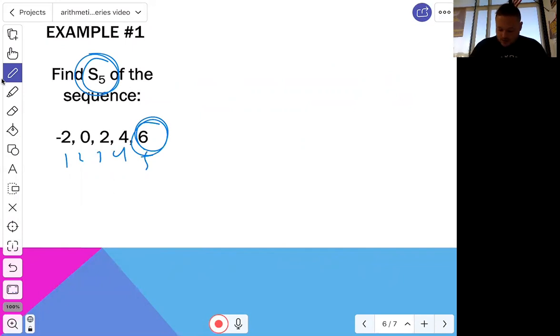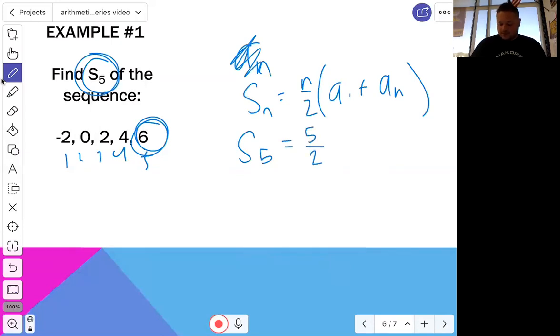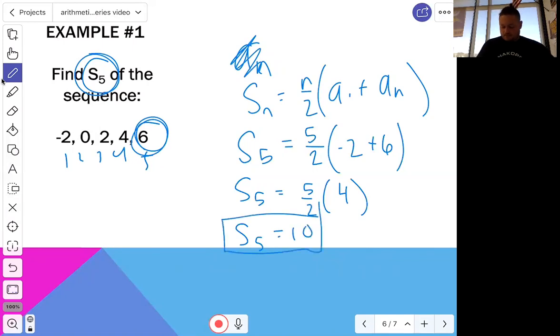So since I know that, I can go ahead and use the formula SN equals N over two times A1 plus AN. Okay, so we're finding the sum of the first five terms. That means there's five terms that we're adding together. So I'm going to plug that in for N. My first term is negative two, and my last term is six. Once we have that, we can just go ahead and plug this into a calculator. I'm just going to do it by hand because I like to party. So five over two times negative two plus six is four. So the sum of the first five terms would be five over two times four, which would be just 10. That's all there is to it.